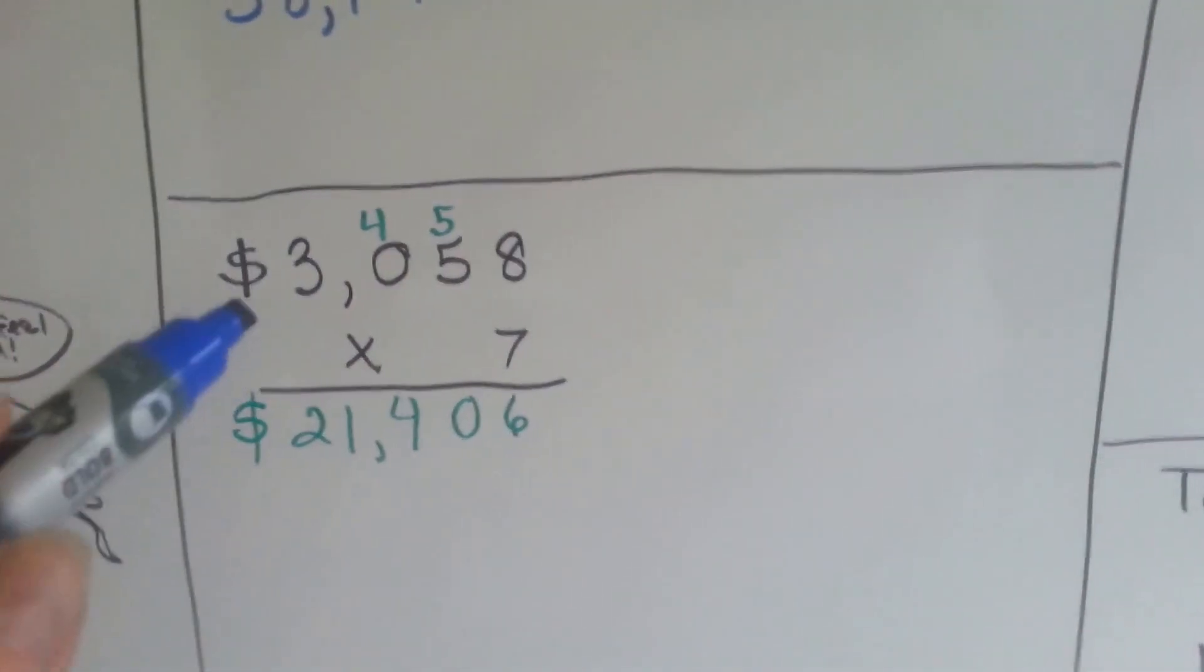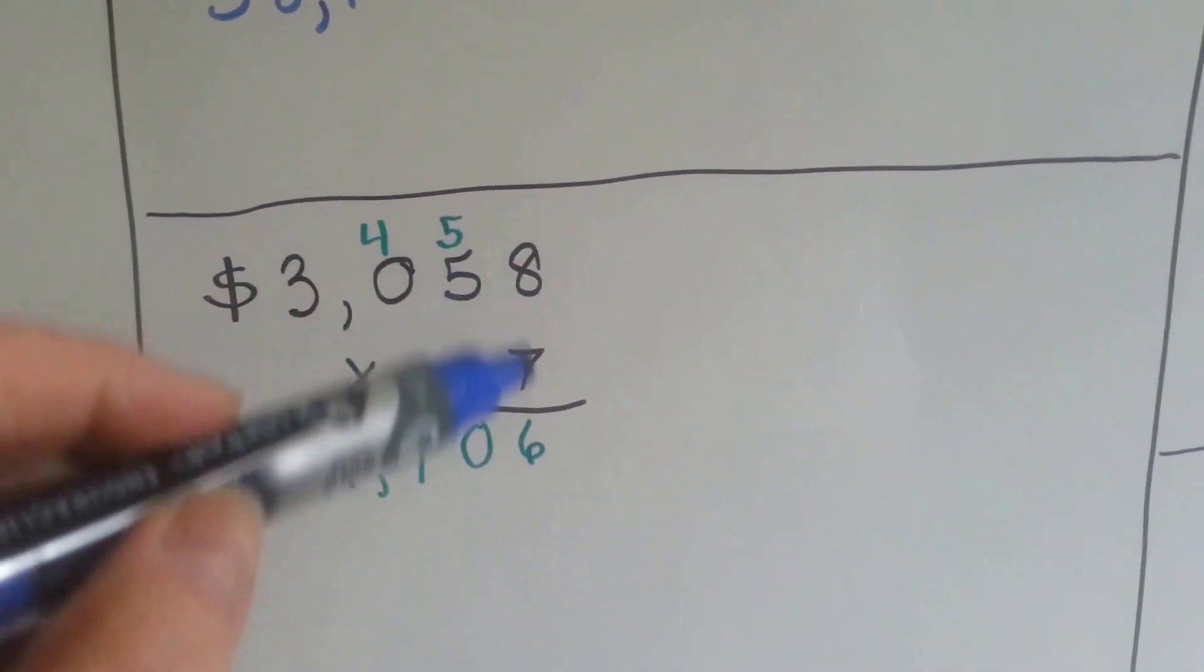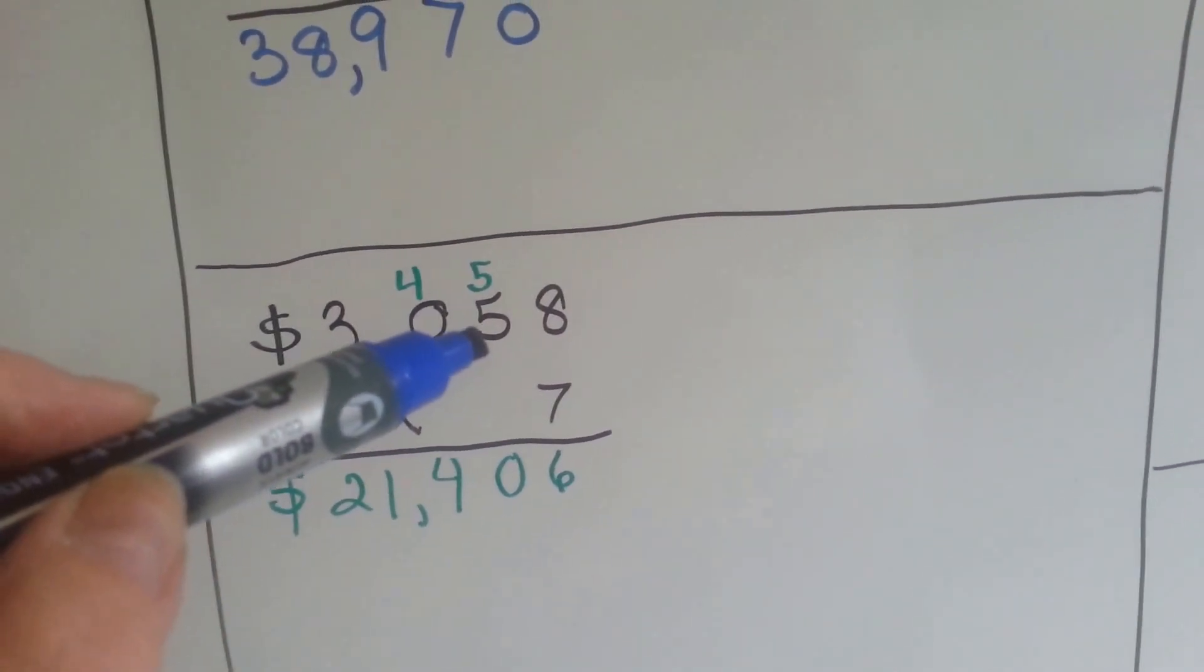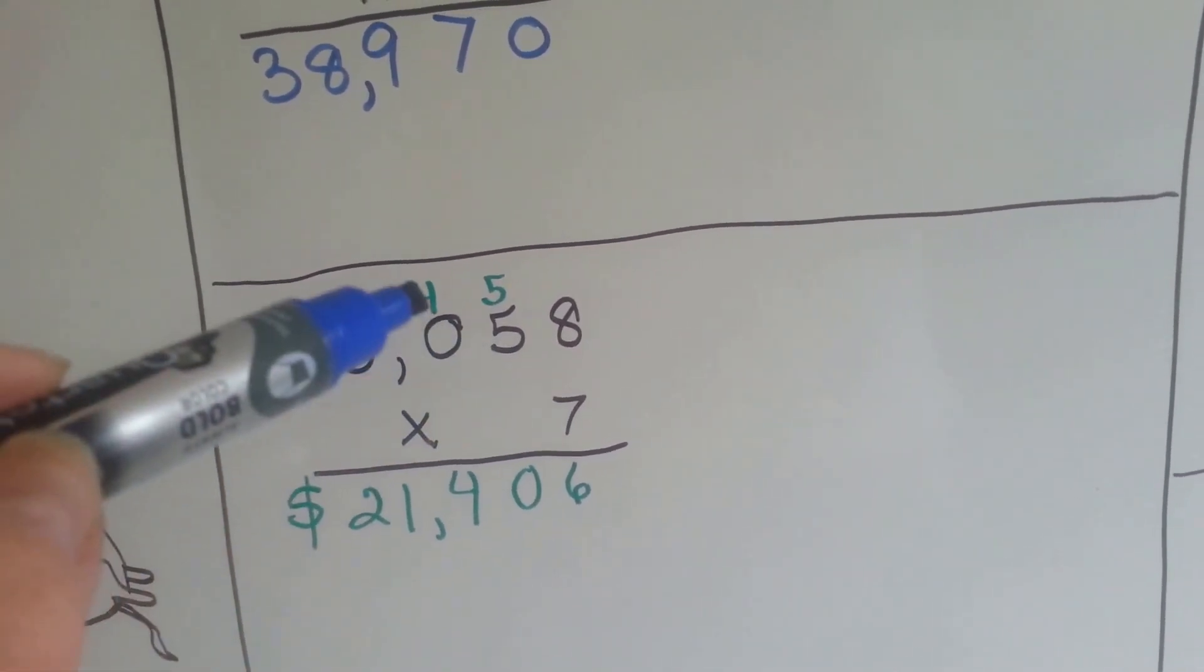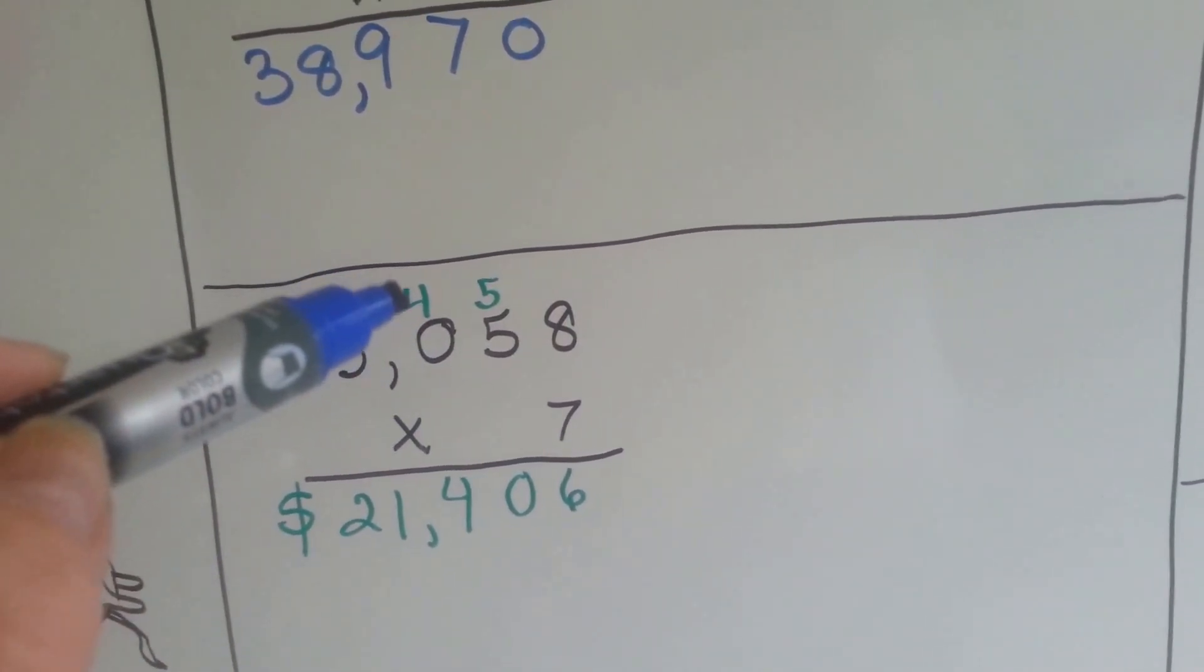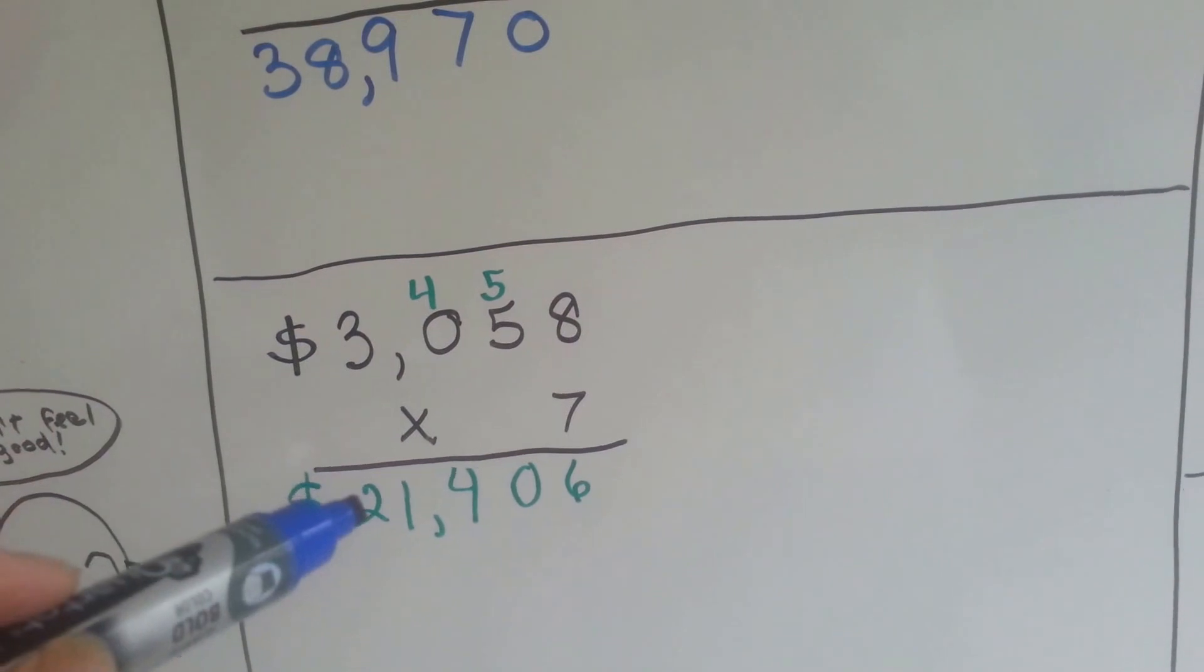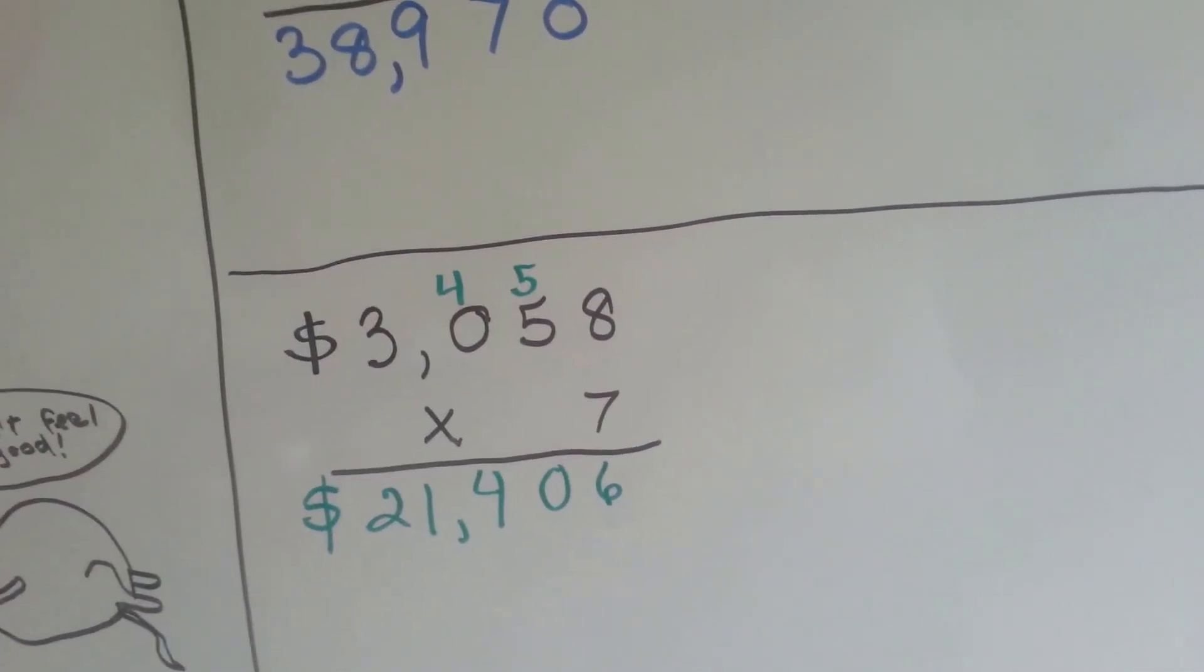Even with money, all we have to do is remember the dollar sign. 7 times 8, we do the ones, is 56. Carry the 5, put the 6 down. 7 times 5 is 35, 35 and 5 is 40. We put the 4 here and put the 0 down. 7 times 0 is 0, but we still add the 4. So 0 plus 4 is 4. And then 7 times 3 is 21. We put the 21 down. We put our comma in and we remember our dollar sign.